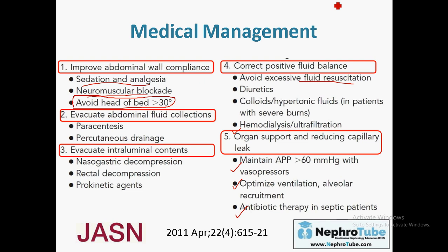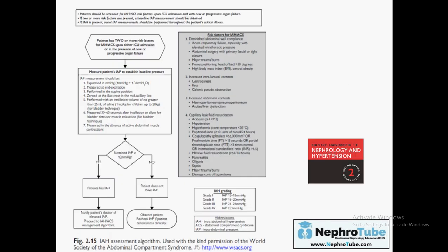All of these measures are relatively easy to perform, but the most commonly missed are sedation/analgesia and fluid balance control, although they are very easy and may significantly help in decreasing intra-abdominal pressure. The Oxford Handbook summarizes all of this in a diagram covering risk factors, how to measure intra-abdominal pressure through the urinary bladder, and the classification of intra-abdominal hypertension and acute compartment syndrome.